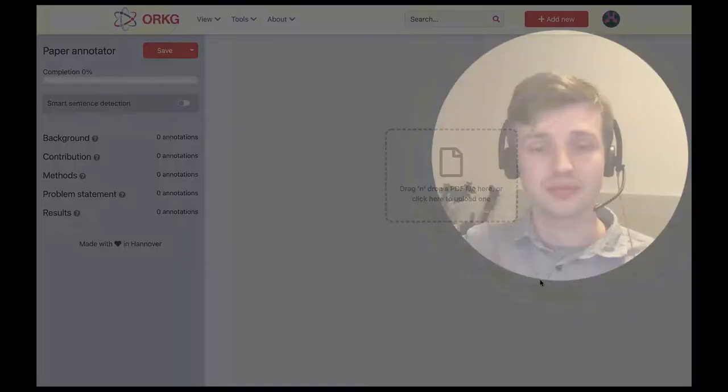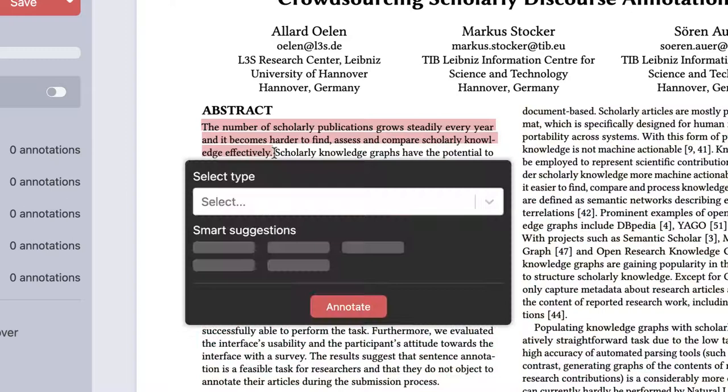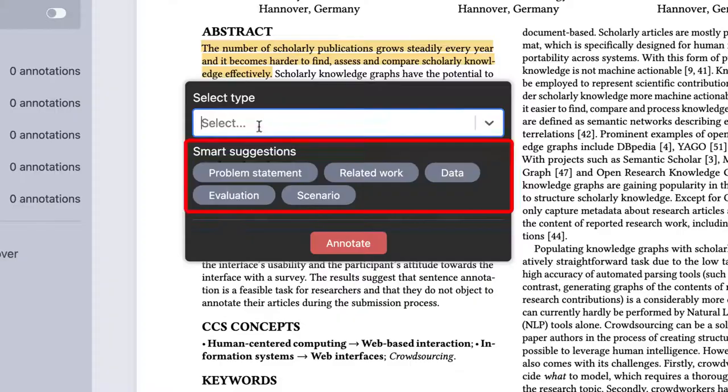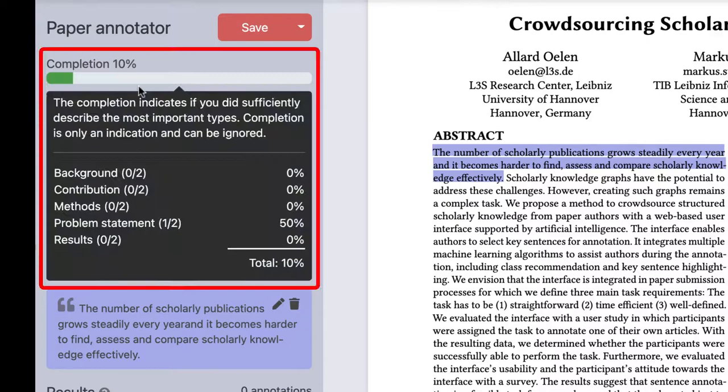Now we will look at the demonstration of the interface. This is the annotation interface. The first thing we do is to upload a paper in PDF format. Then we can start annotating a sentence by making a selection. We can either select a type from the list of all classes or we can choose one of the suggested types. In this case, the class problem statement seems to be right. After adding the annotation, it is displayed in the left sidebar.